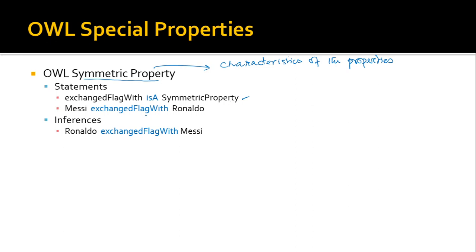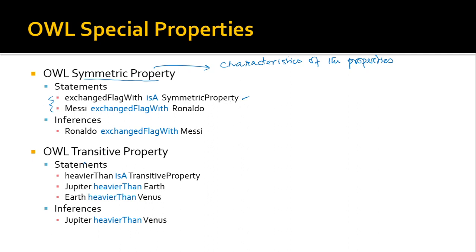If we have 'Messi exchangeFlagWith Ronaldo' in our knowledge base, and we've defined exchangeFlagWith as a symmetric property, then we can infer 'Ronaldo exchangeFlagWith Messi'. We can also define a property to be transitive. For example, if 'heavierThan' is defined as transitive, and we have 'Jupiter heavierThan Earth' and 'Earth heavierThan Venus', then we can infer 'Jupiter heavierThan Venus' by the logic of transitivity.